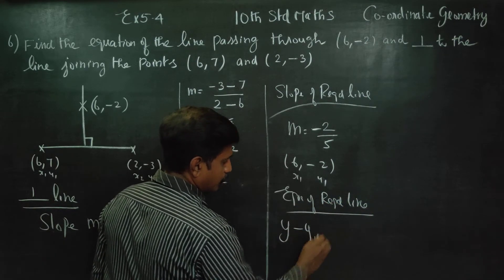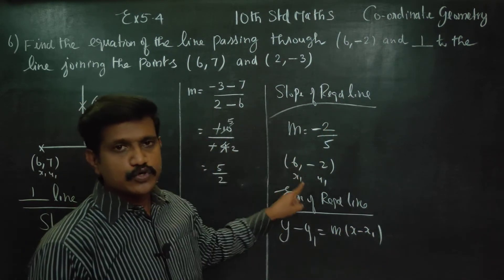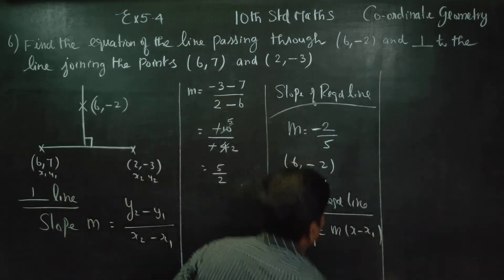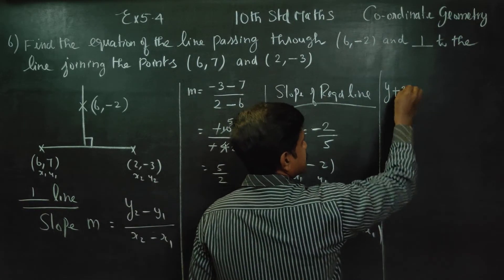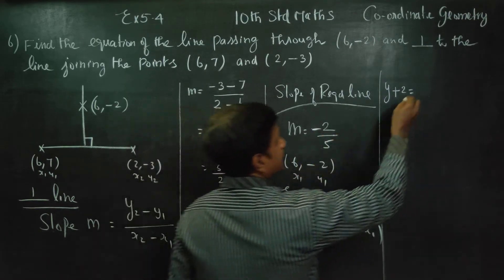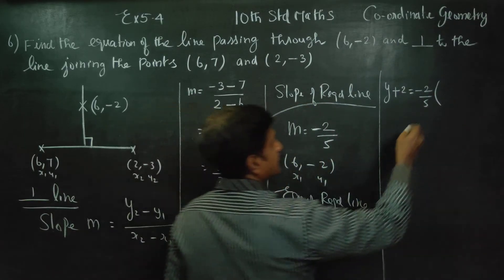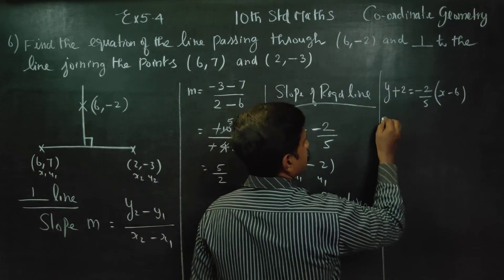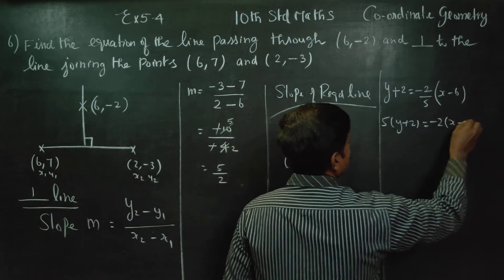Equation of required line using the one-point slope formula: y minus y1 equals m into x minus x1. Substituting: y minus (-2) equals (minus 2 by 5) into (x minus 6). Cross multiply: 5 into (y plus 2) equals minus 2 into (x minus 6).